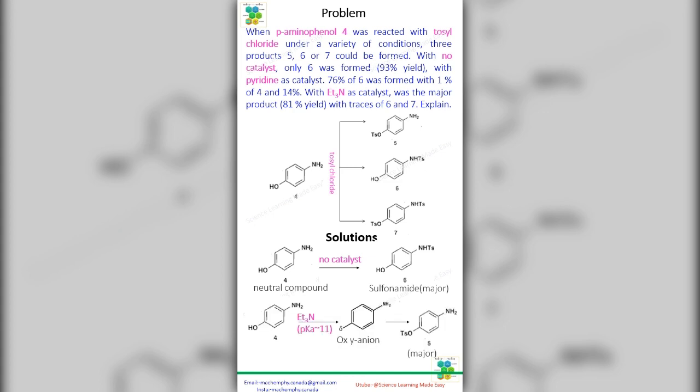pKa about 11, can remove most of the phenolic proton and the oxyanion is now more reactive than the amine. So 5 is major product.